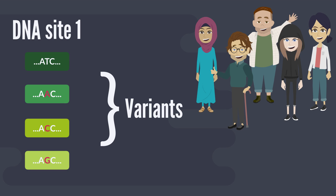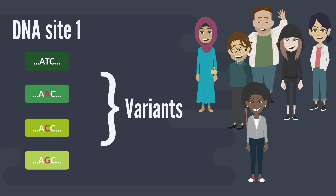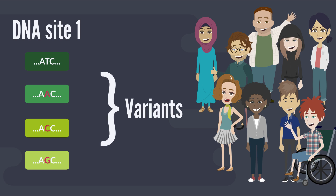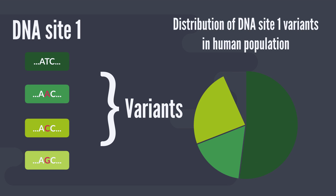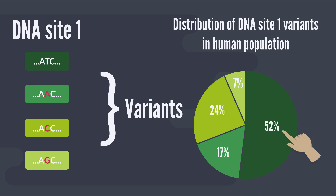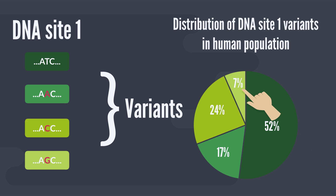Because of this kind of variation, you might be taller than your friends or have a different eye color than your grandparents. To understand how common a certain DNA variant is in the human population, we can plot a pie chart. Here we can see that the dark green variant is most common across all people, while the variant represented by the lightest green color is much rarer.